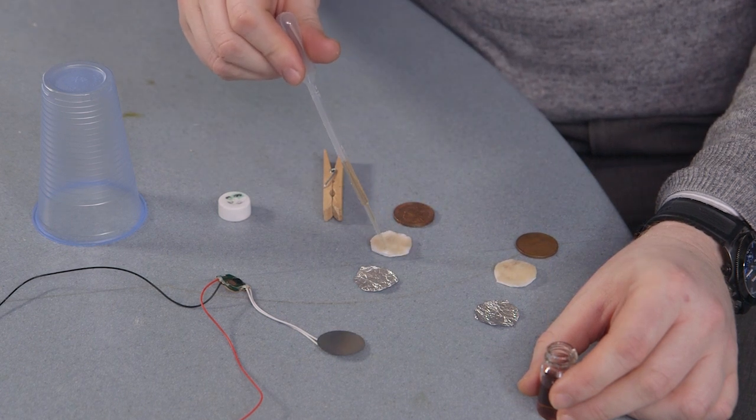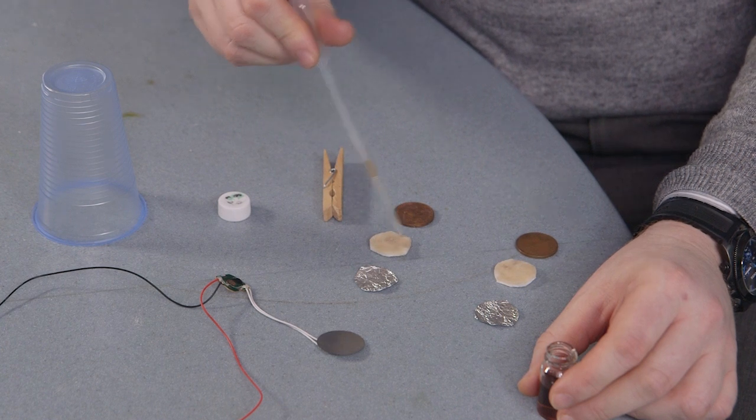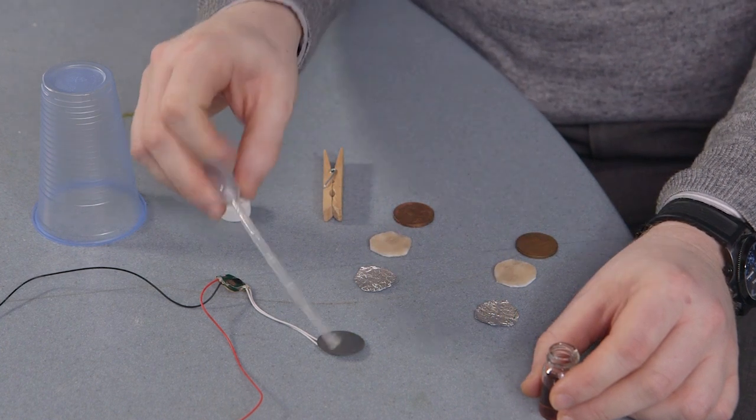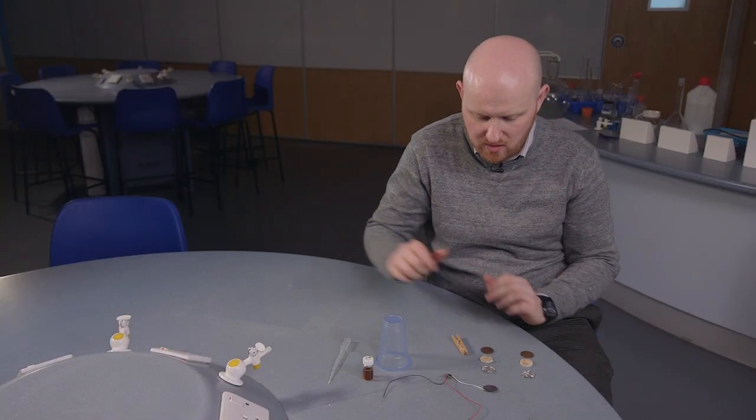So that's going to allow our electrons to move through our voltaic cell. Vinegar works really nicely, nice acidic solution and easily available at home.